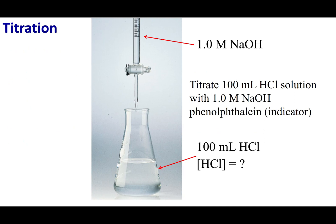So in my experimental setup, what I'm going to have is an Erlenmeyer flask. In that Erlenmeyer flask, I'm going to place 100 mL of HCl. I don't know what the concentration of that HCl is, and that's going to be the point of this experiment. I want to find the concentration of this acid.